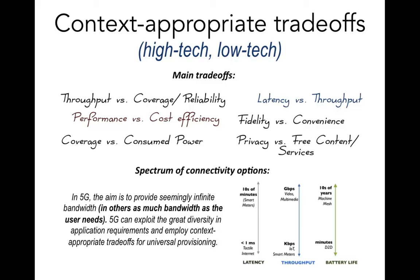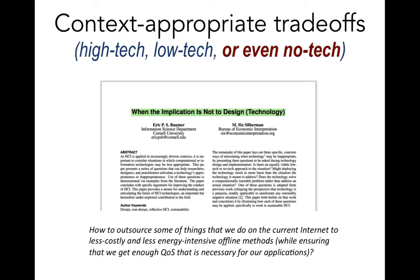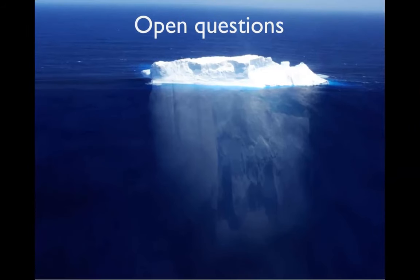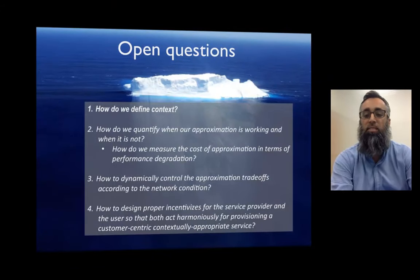When we talk of context-appropriate trade-offs, it may also be appropriate to use no technology at all — an idea highlighted previously in the literature. An important problem then becomes: how do we outsource some of what we currently do on the internet to less costly and less energy-intensive offline methods? Context-appropriate trade-offs would encompass high-tech, low-tech, and even no-tech solutions. Through this work we have raised many questions rather than providing many solutions, but we are working on concrete case studies applying principles from approximate networking.